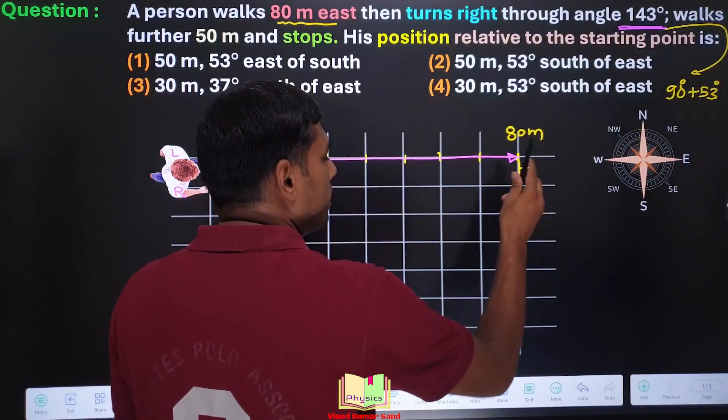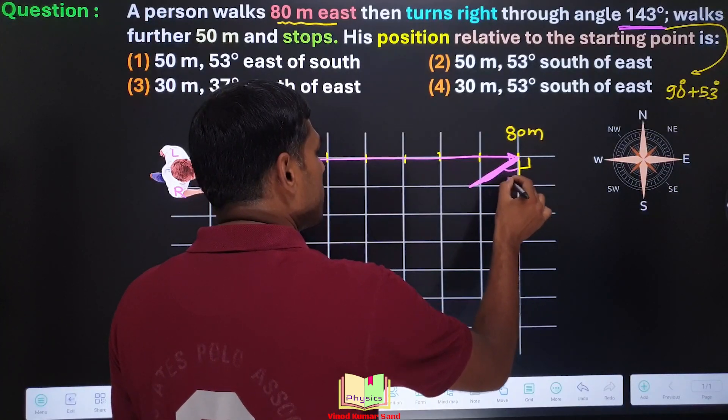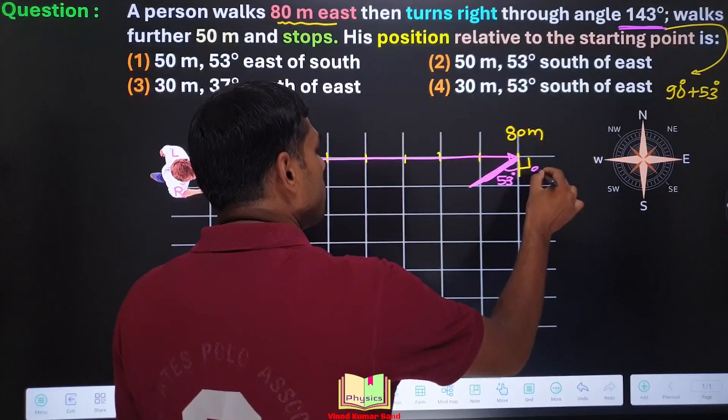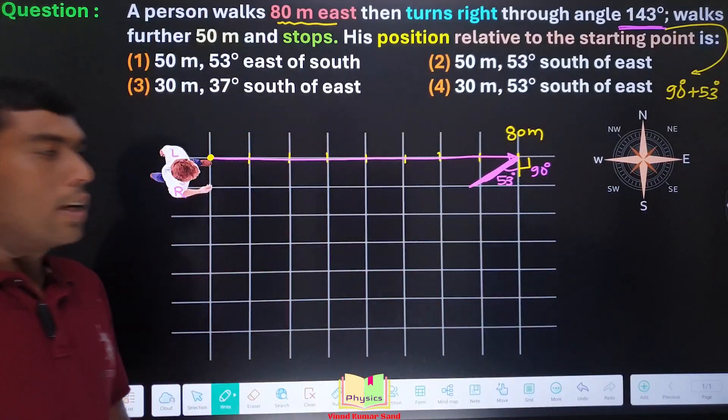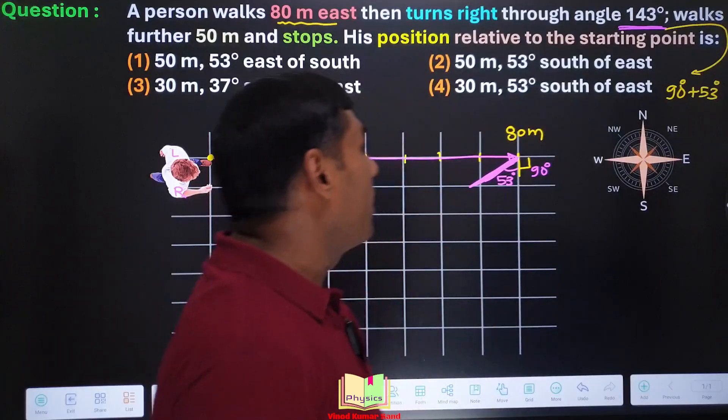So already this is 90 degrees, we need 53 degrees more. This angle we consider as 53 degrees. This was 90 degrees. So that is the total angle, 143 degrees.